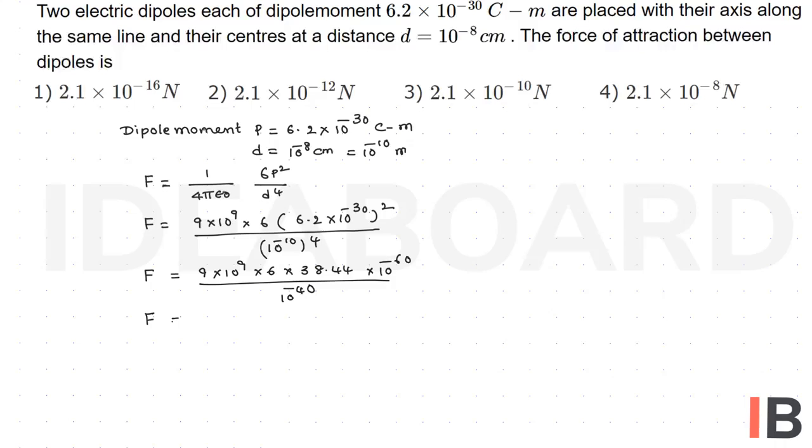After simplification, we will get 2.1 × 10^-8 newton. Hence, the fourth option is the right option.